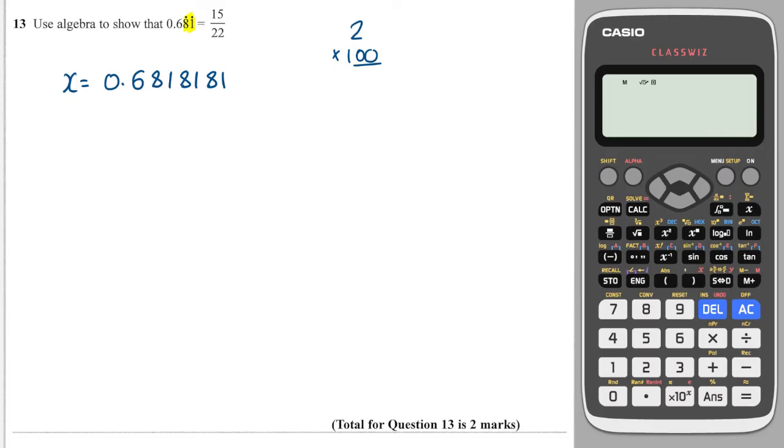I'm going to do it above so it's easy for me to subtract afterwards. So I'm going to get 100X. And timesing this through by 100 is going to move the decimal place two spaces. So I'm going to get 68 point and then 181818181. And that's going to go on forever and so is that. But doing this method means you're going to line them up perfectly.